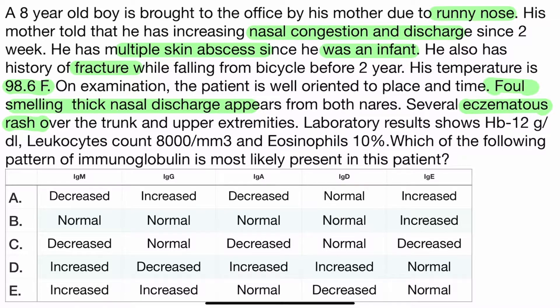Laboratory results show that immunoglobulin E is 12, leukocyte count is 8000, and eosinophils are 10%. Which of the following patterns of immunoglobulin is most likely present in this patient?